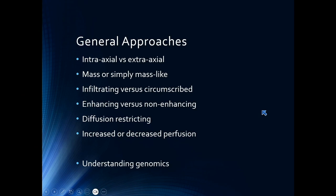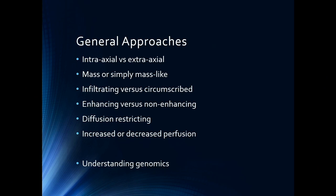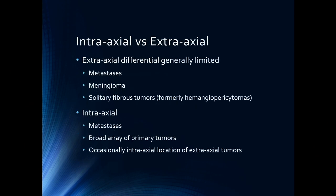Some of the general approaches we're going to use: we're going to talk about whether something is intra-axial versus extra-axial, because that really makes a big difference in terms of what our differential diagnosis is. Whether something simply looks like a mass or actually is a mass makes a big difference as well. Other characteristics that are helpful are infiltrating versus circumscribed, enhancing versus non-enhancing, diffusion and perfusion, as well as genomics. We're going to go through all of these things and apply them to cases so you can understand how to get through brain tumors without getting scared.